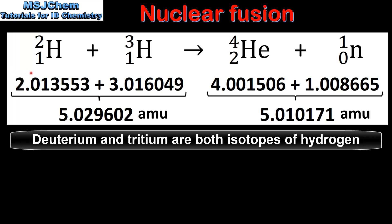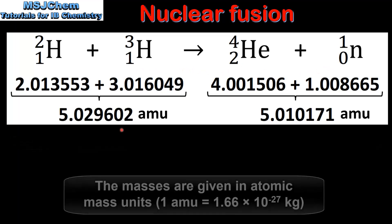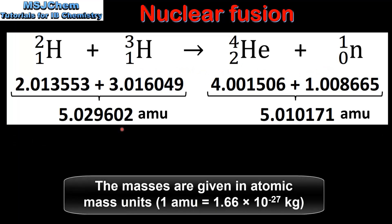In this fusion reaction deuterium and tritium react together to form helium and a neutron. The first step is to calculate the mass of the reactants and the products. Note that these masses are shown in atomic mass units. If we look at the masses of the reactants and the products, we can see that the mass of the products is less than the reactants.